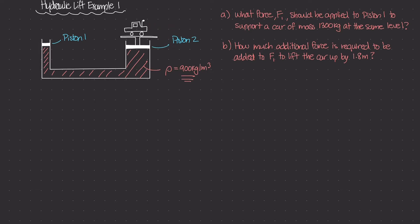We do need a little bit more information for these two pistons. Piston one has a diameter of seven centimeters — both pistons are circular. Piston two is obviously a lot bigger, and its diameter is 30 centimeters. So respectively, the radius for piston one is 3.5 centimeters and the radius for piston two is 15 centimeters — just the diameter divided by two.